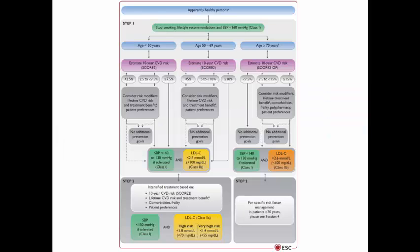In this diagram dealing with apparently healthy populations, the LDL goal for those less than 70 years is less than 100 mg/dL. If the patient is more than 70 years old, the goal is the same but the class of recommendation is 2B. In step 2, if the patient is high risk, the goal is less than 70 mg/dL, and if very high risk, the goal is less than 55 mg/dL.